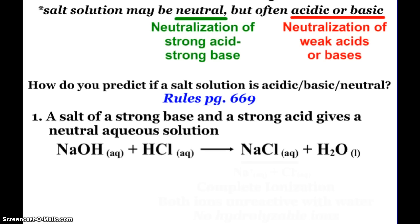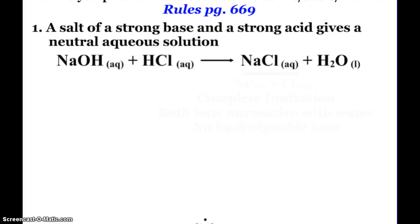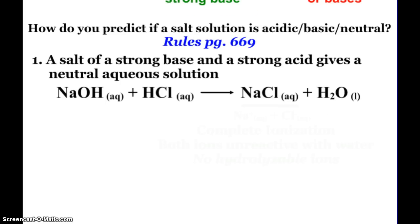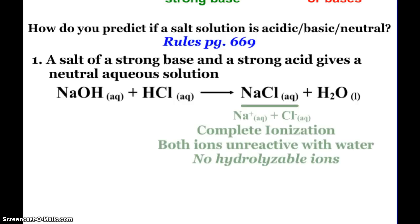A salt of a strong base and a strong acid will give a neutral aqueous solution. Here's my example: sodium hydroxide and hydrochloric acid. Sodium chloride in water is completely ionized. The sodium ion and the chloride ion are unreactive with water, so we just have a salt water solution. There are no hydrolyzable ions.